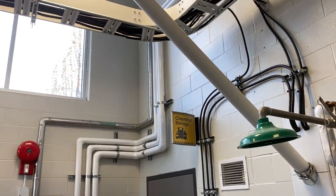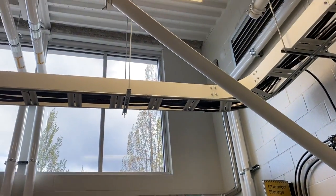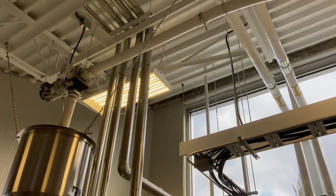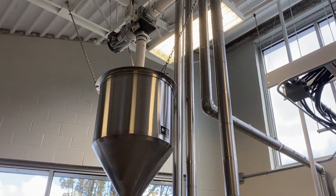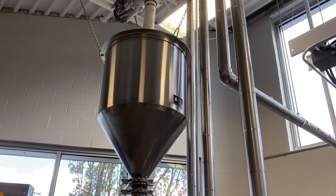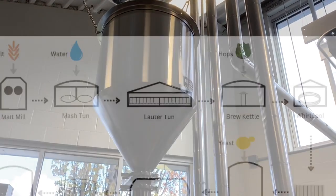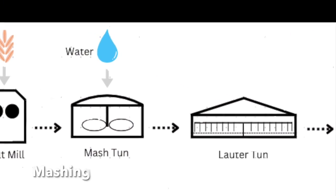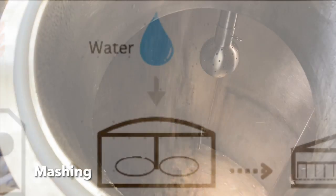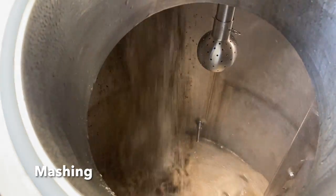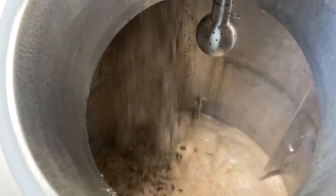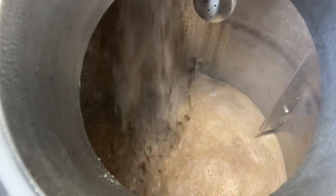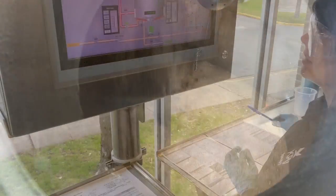After being crushed by a set of rollers in a roller mill, the grist is typically transported by a flux auger to the top of the mash tun where it is collected in a grist hopper. Mashing starts as soon as the grist and warm water meet. Grist is mixed with the brewing liquor as it enters the mash tun.